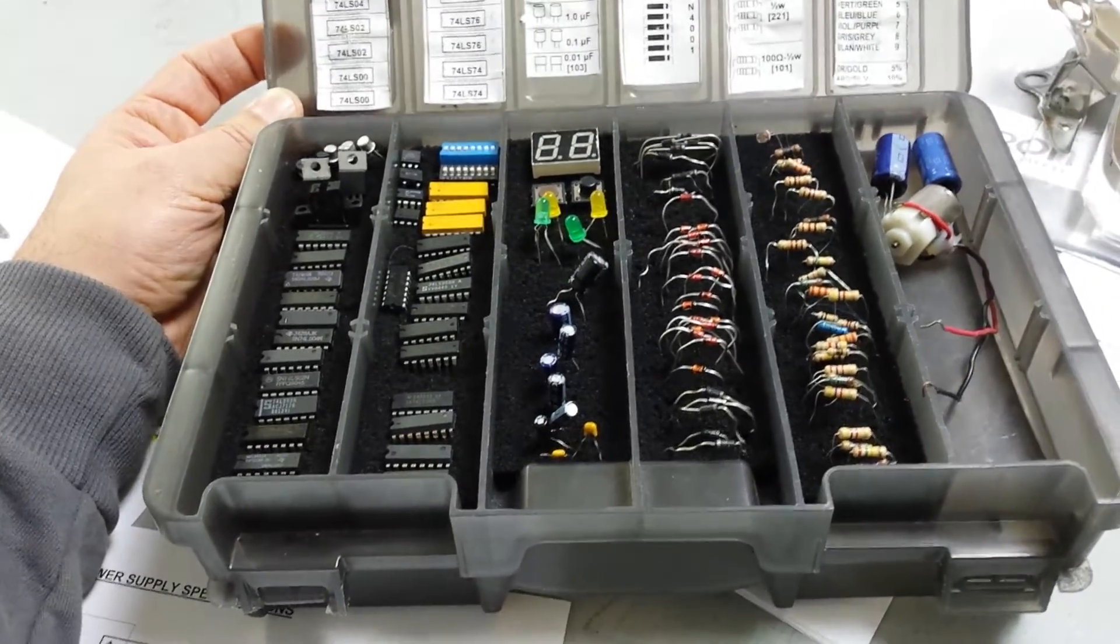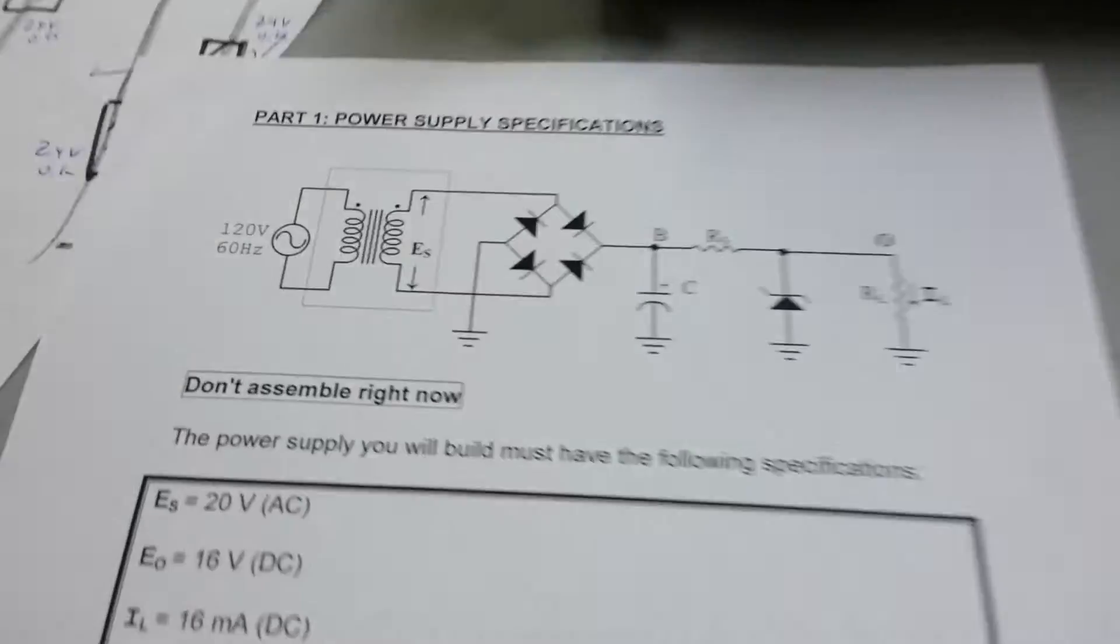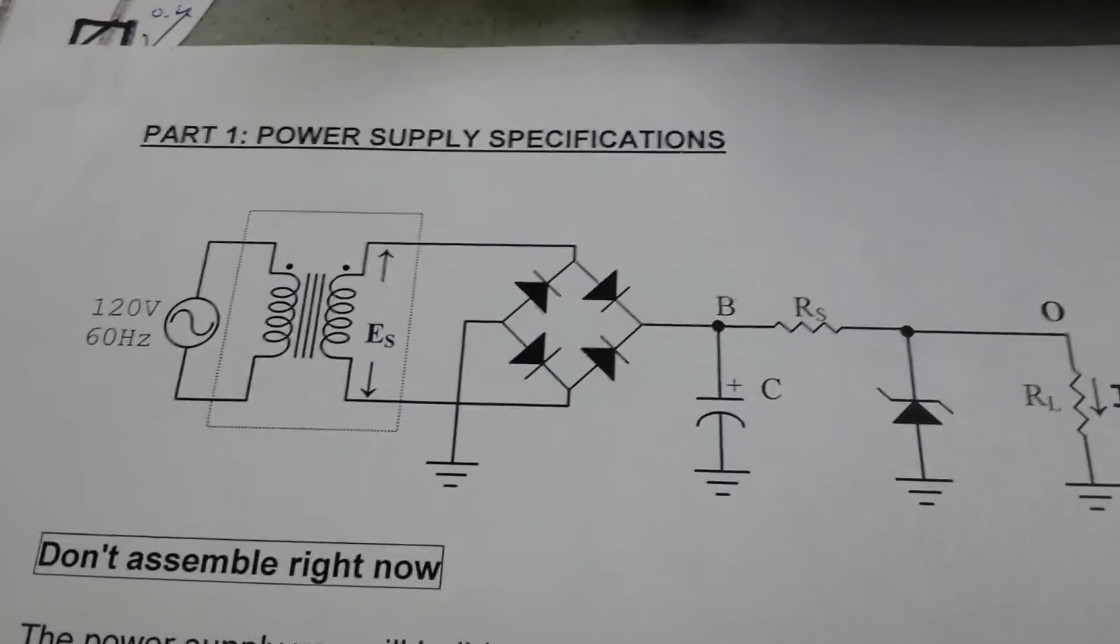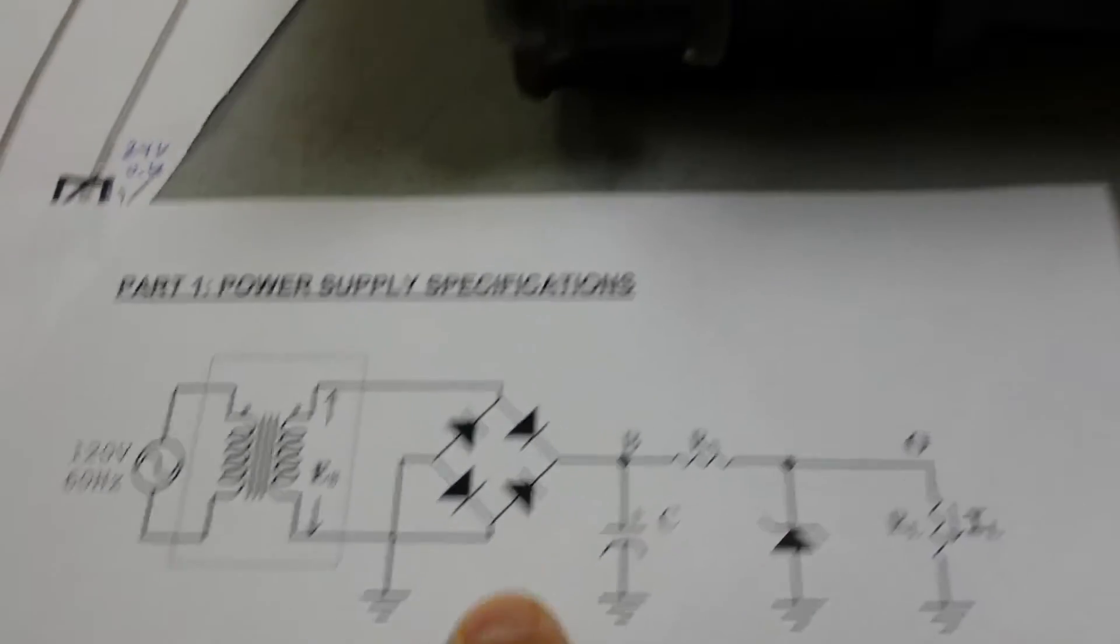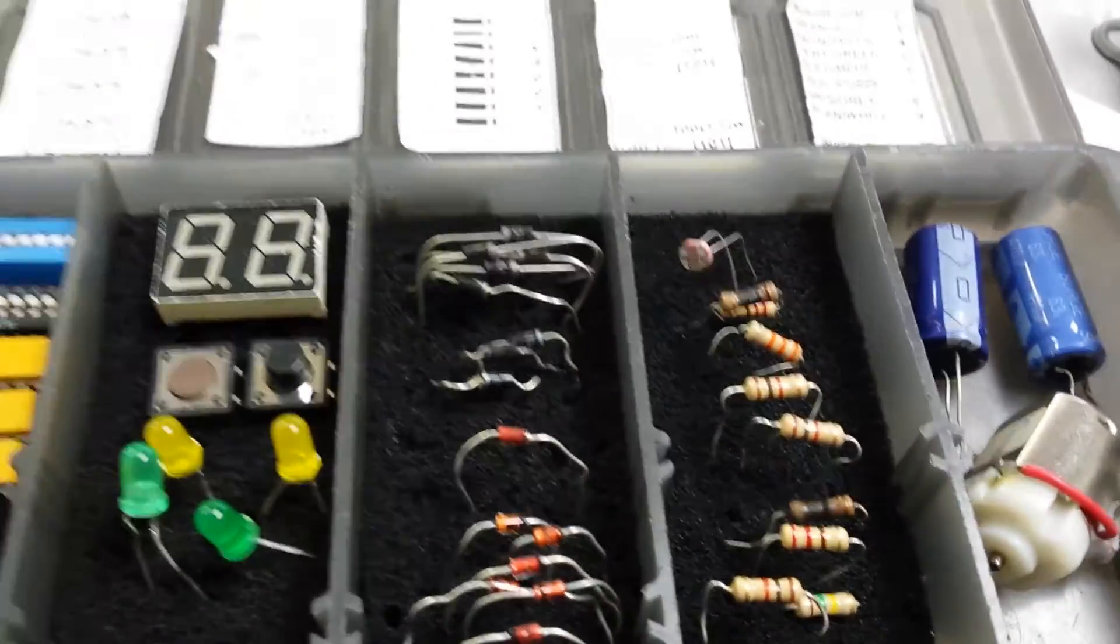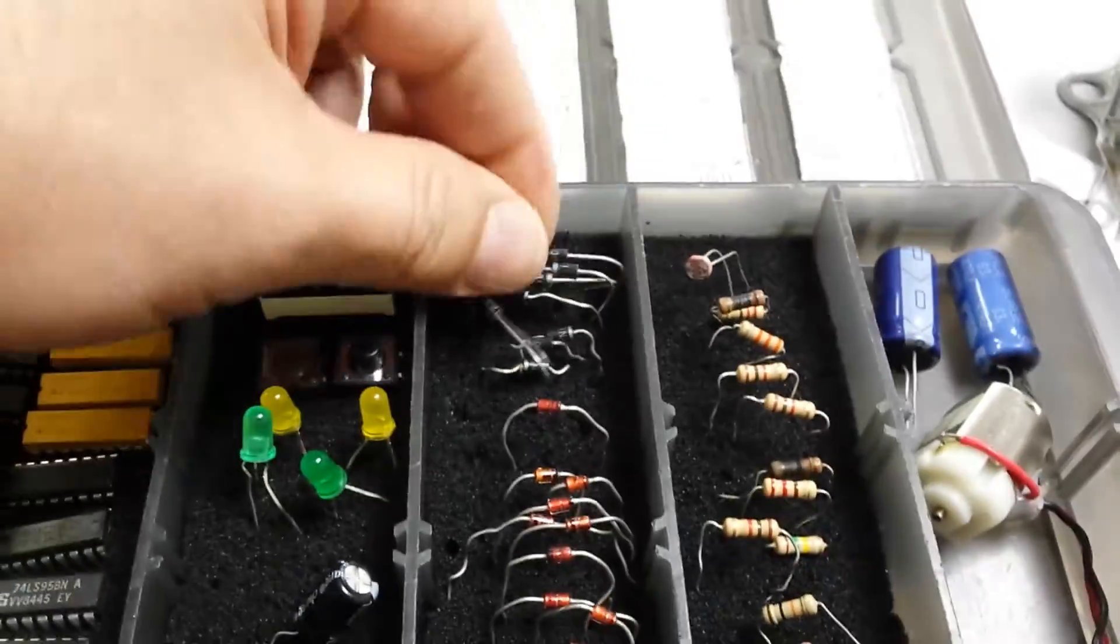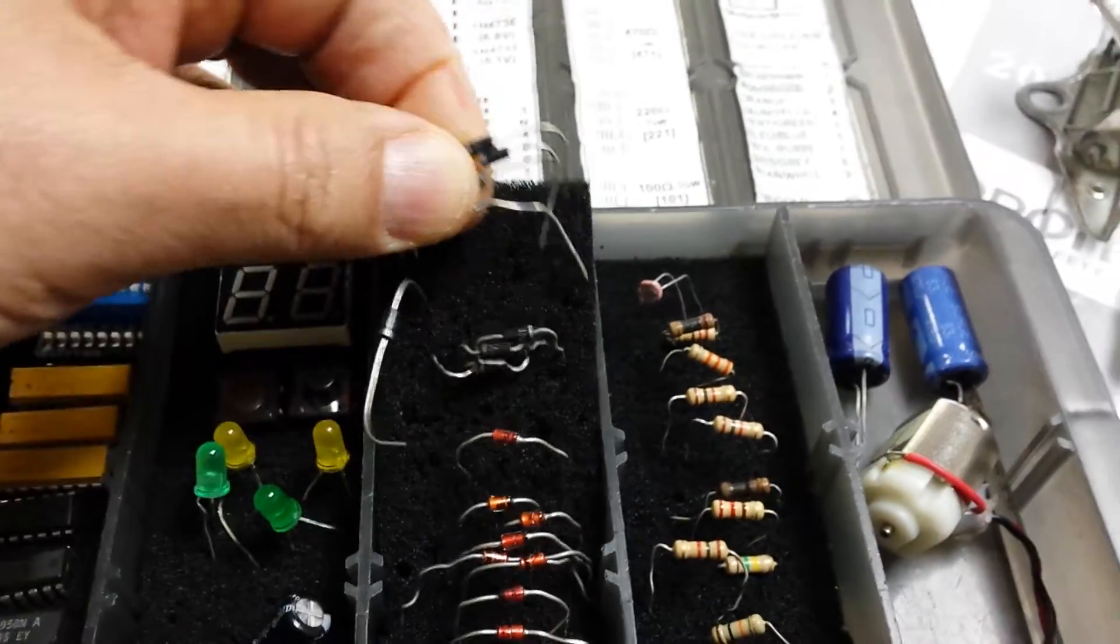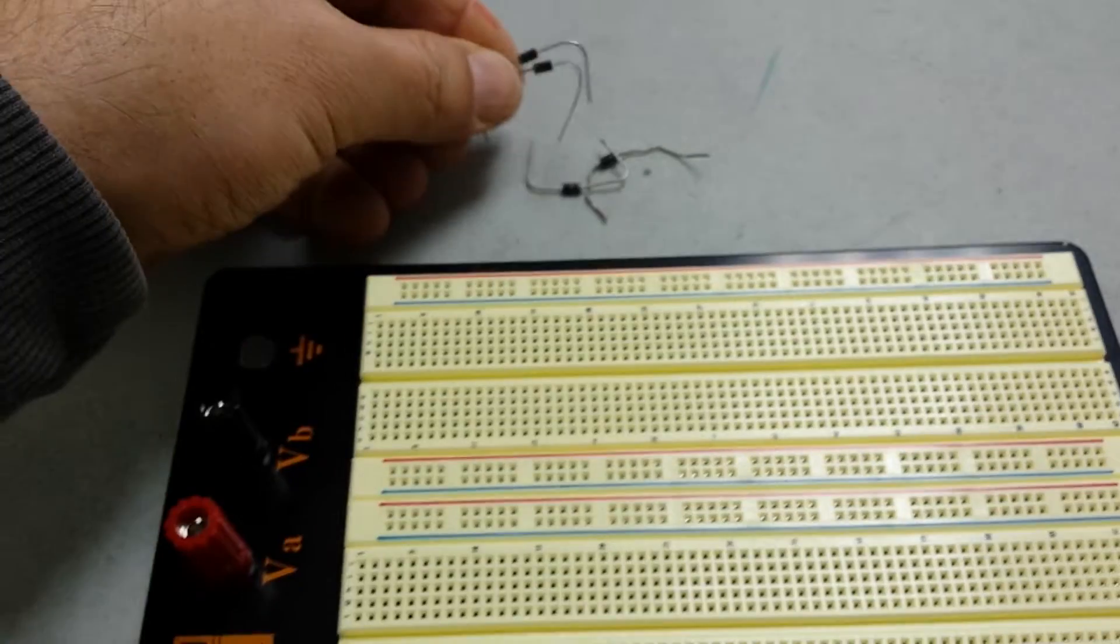So what we need here is four diodes to form the bridge rectifier. The four diodes are right here, the first, second, third, fourth column. Four diodes that could be the 4001 or 4007.